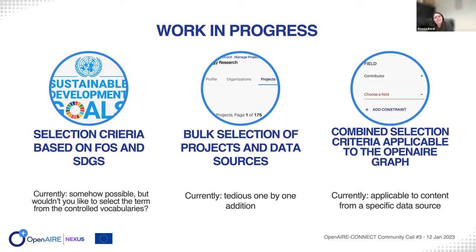Some work in progress. We had requests from managers of different dashboards to provide more advanced configuration for the selection of products from the OpenAIRE graph that should be included in the gateways. The first one was the selection criteria specific for fields of science and sustainable development goals. The classification by FOS and SDGs are features of our content graph, and currently it's possible to exploit them for creating your own gateway content, but it's not really easy. We are thinking about something that will enable you to select directly the terms from the controlled vocabularies and their hierarchy.